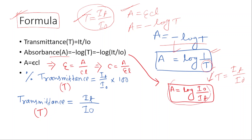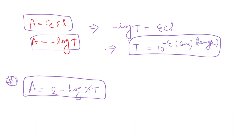The formula summary: A = εCL, and A = −log(T) where T = It/I0. Percentage transmittance equals (It/I0) × 100. There is also a useful formula: A = 2 − log(% transmittance).